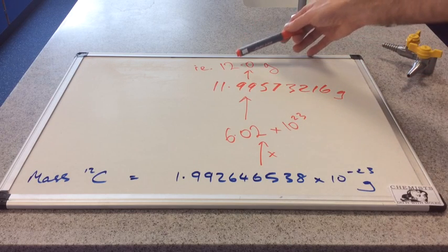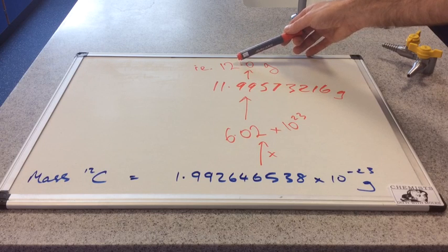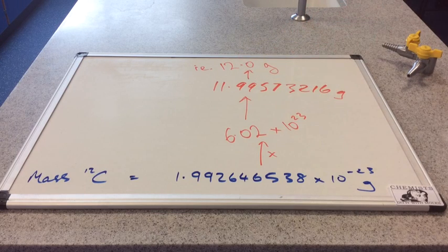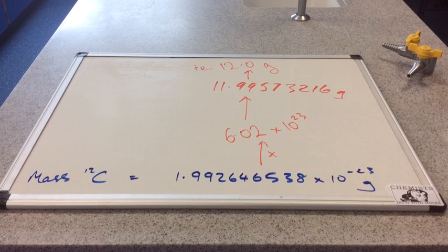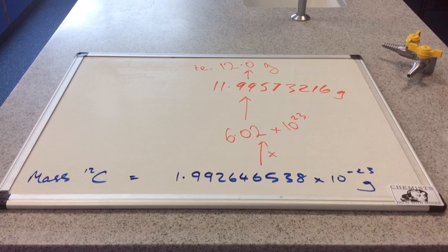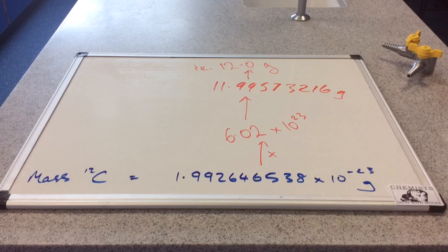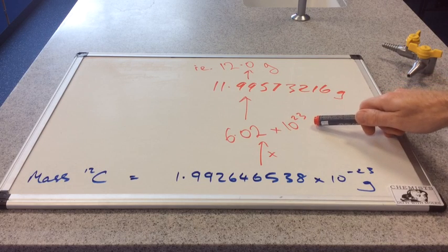So you can see that multiplying this number by the mass of the atom we get 11.99573216 grams. So that rounds nicely to 12.0 grams. So hopefully you're going to be familiar with that number for carbon because that's actually the mass number for carbon that we see on the periodic table. So what is the mass number? It's actually the mass of this many atoms.